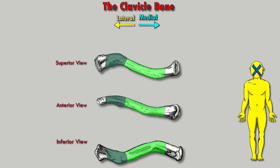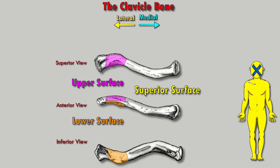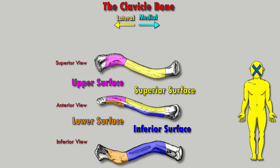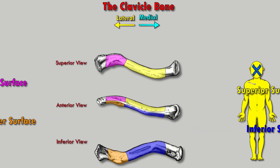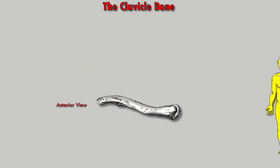Both the lateral end and the medial end have two surfaces and two borders. The lateral one-third surfaces are referred to as the upper surface on top and the lower surface on bottom, whereas the medial end is referred to as the superior surface on top and the inferior surface on bottom. Both the lateral and medial sides of the shaft have an anterior and posterior border.